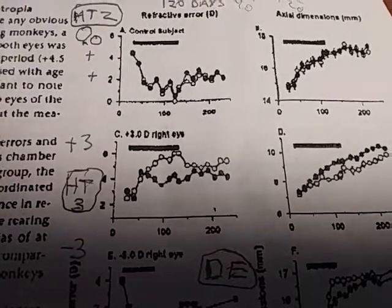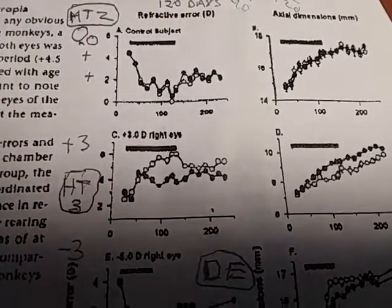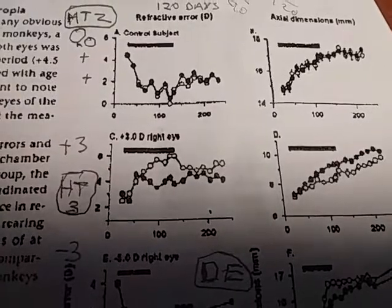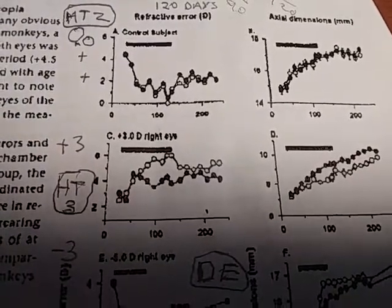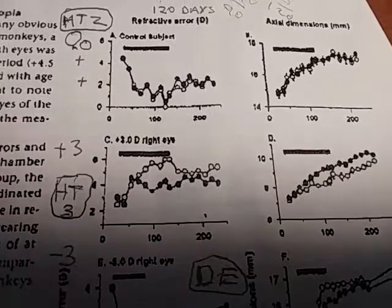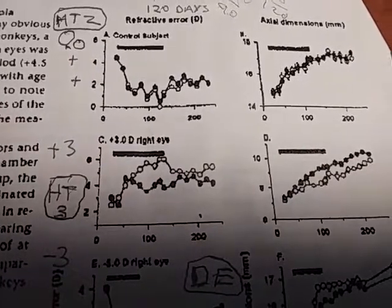Plus 2 diopters is a normal refractive state for all of us. It's preferable if you have a plus 2 or any positive status. Your eyes are normal and you'll have superior distant vision.